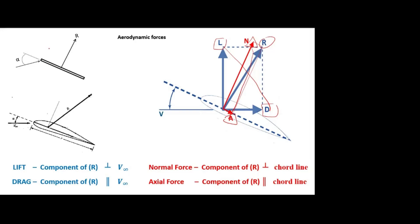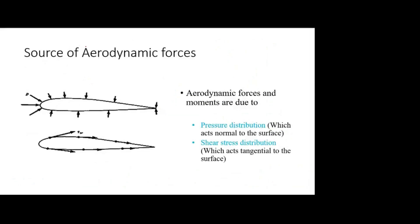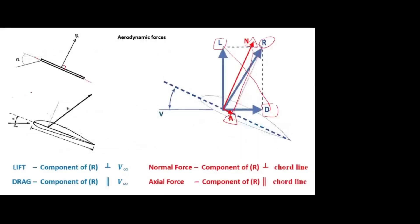For the flat plate, the total resultant force acts perpendicular to the chord line. But for the airfoil, because of its curved nature, it won't be perpendicular - it is inclined rearward. In the 18th century they thought it is perpendicular to the chord line, then Otto Lilienthal found it is inclined rearward. For the flat plate it is perpendicular, but for the airfoil it is inclined rearward - you should not take it as perpendicular.